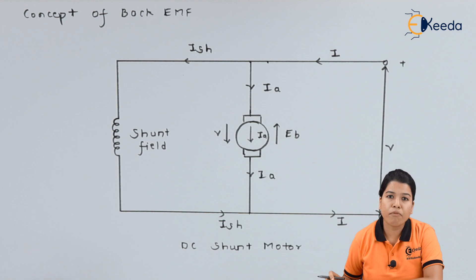Hence the presence of back EMF is very important for working of DC shunt motor because back EMF causes the conversion of electrical energy to the mechanical energy. In case of DC shunt motor, we have already seen that back EMF opposes the supply voltage but the polarity of back EMF is always less than the supply voltage.